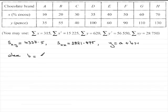b is given by sxy divided by sxx. So all you need to do is put in these two values that we found in the earlier part of the question and divide 4337.5 by 2821.875 and what you should get is 1.5370 and so on.